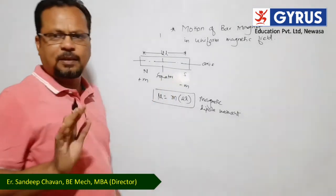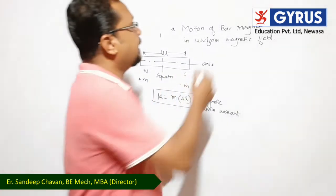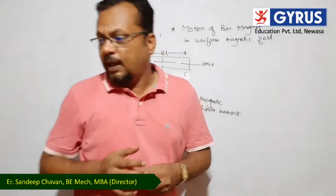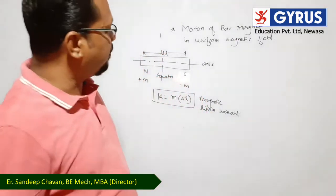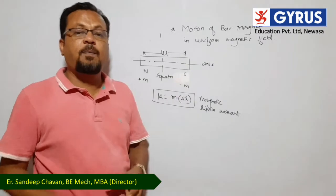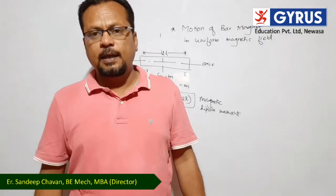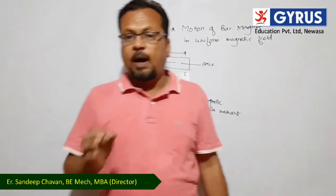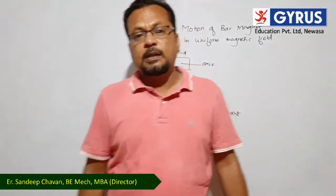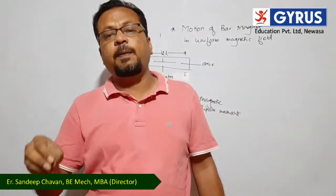In angular simple harmonic motion, the bar magnet is placed in a uniform magnetic field. The bar magnet is freely suspended in the uniform magnetic field and aligns its axis in the direction of the field — this is its natural tendency and equilibrium position.